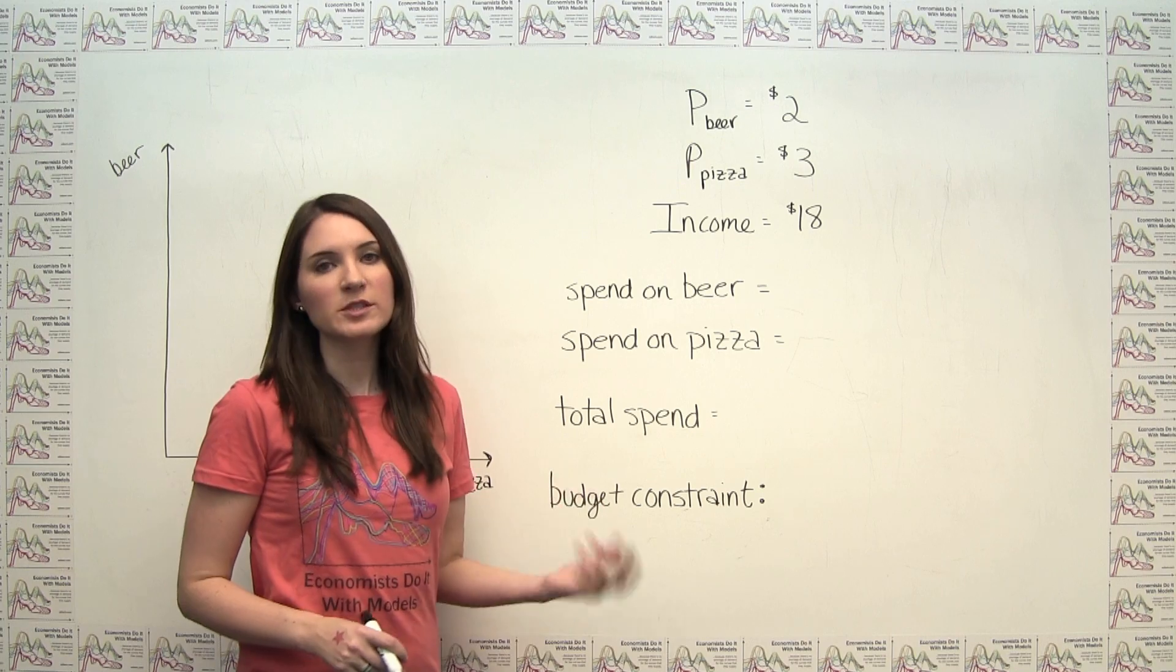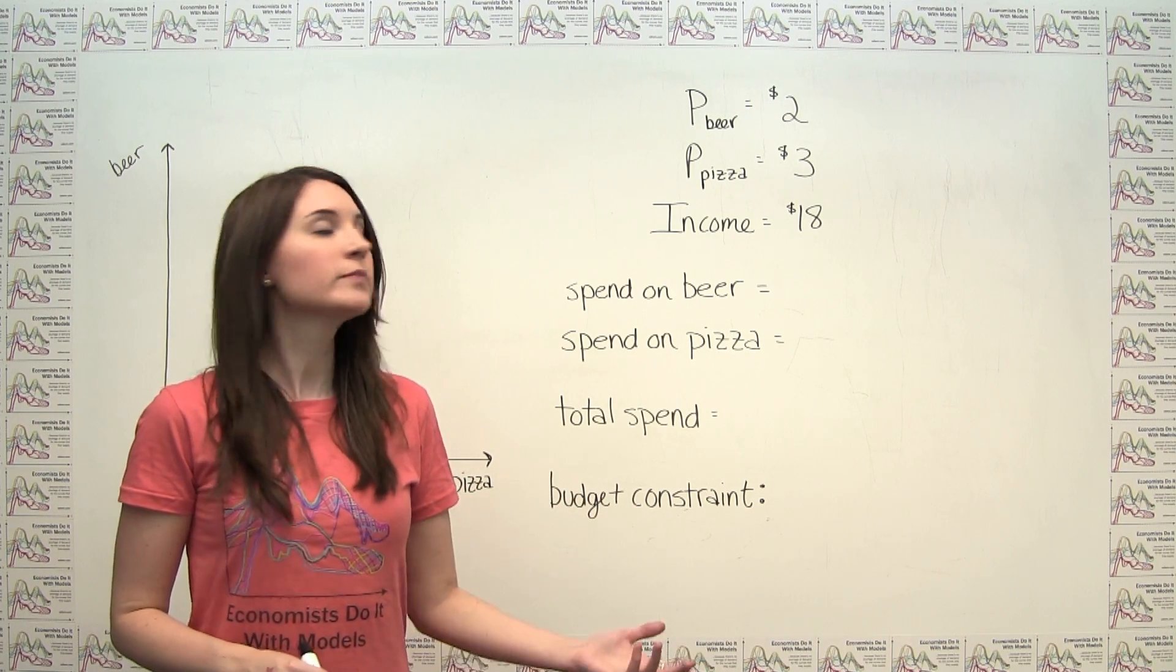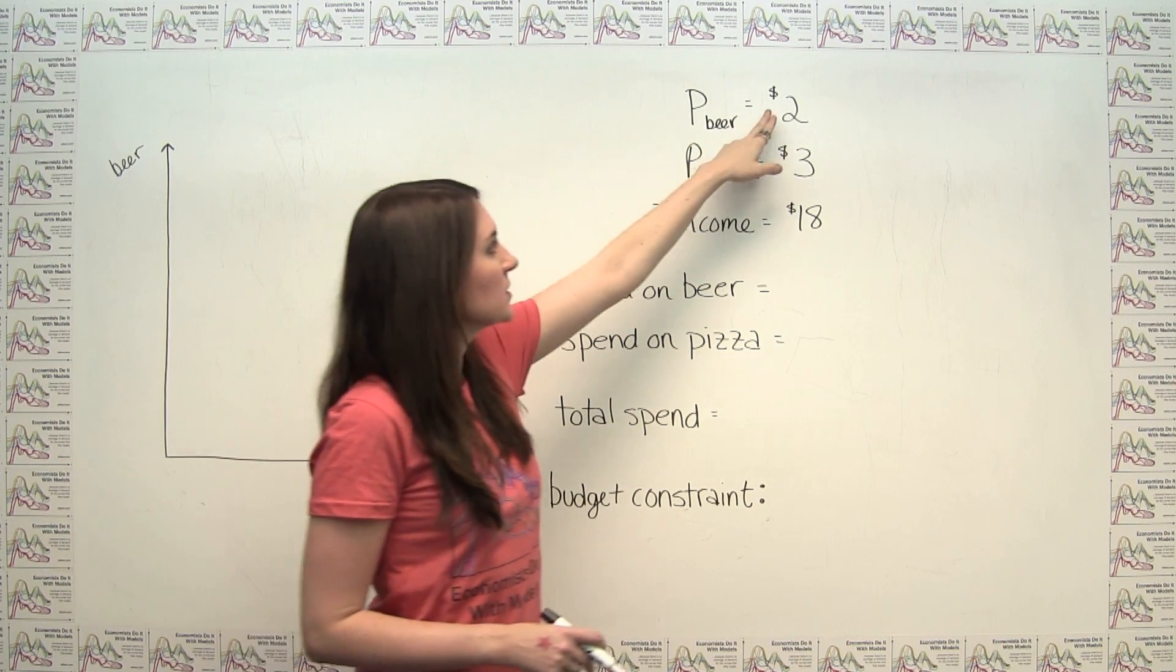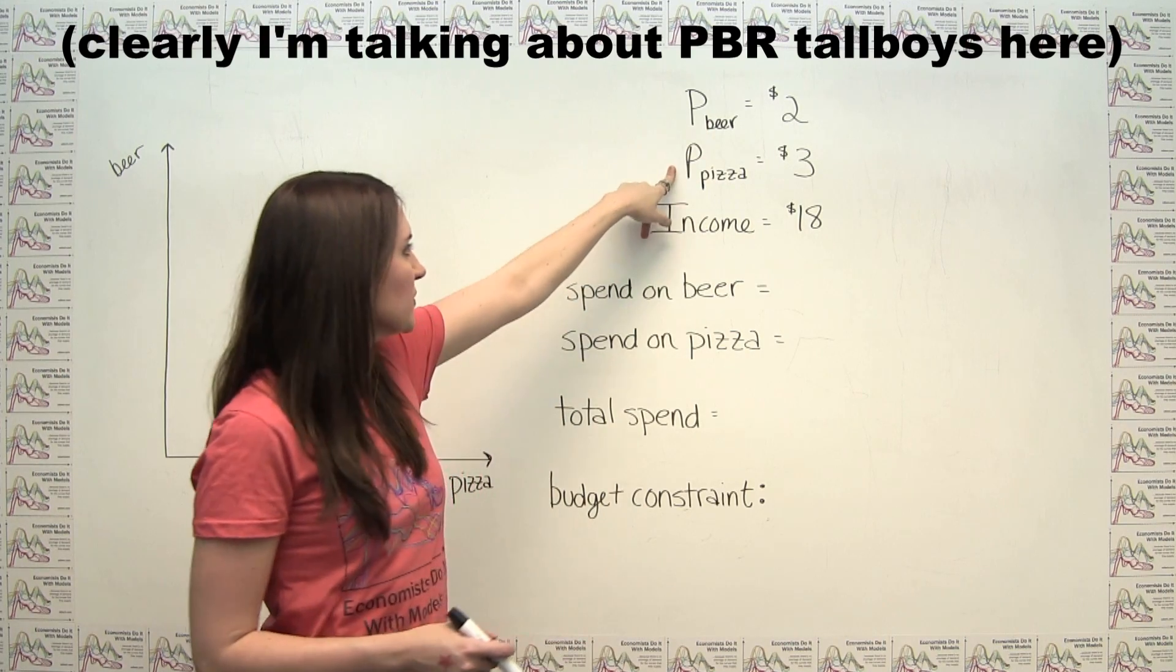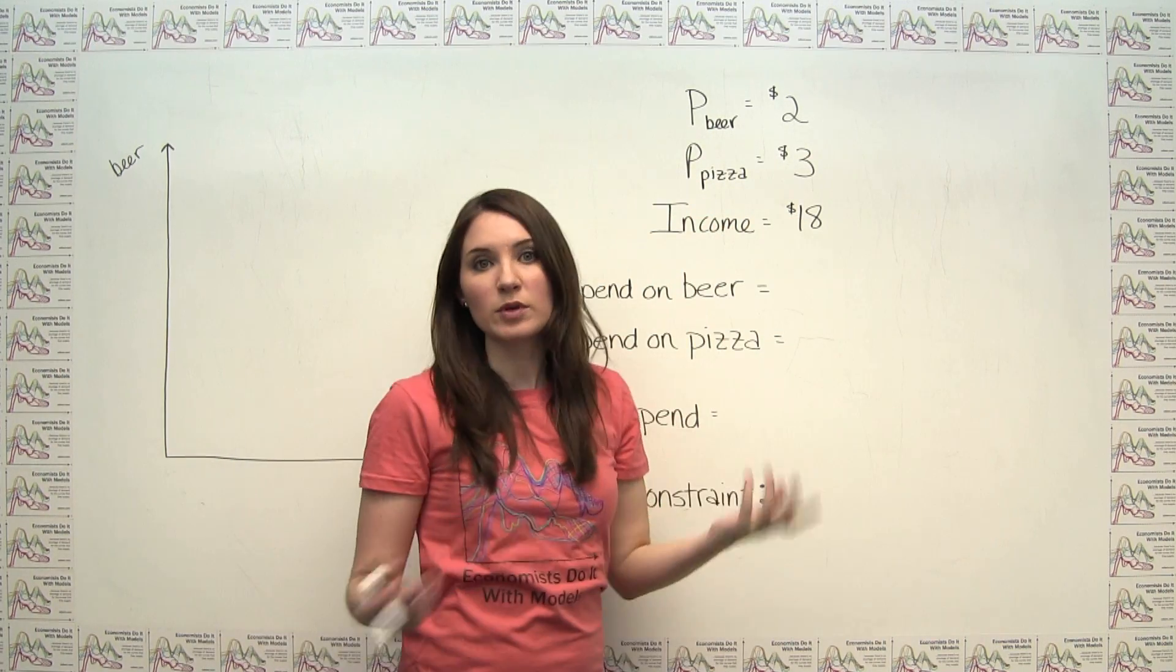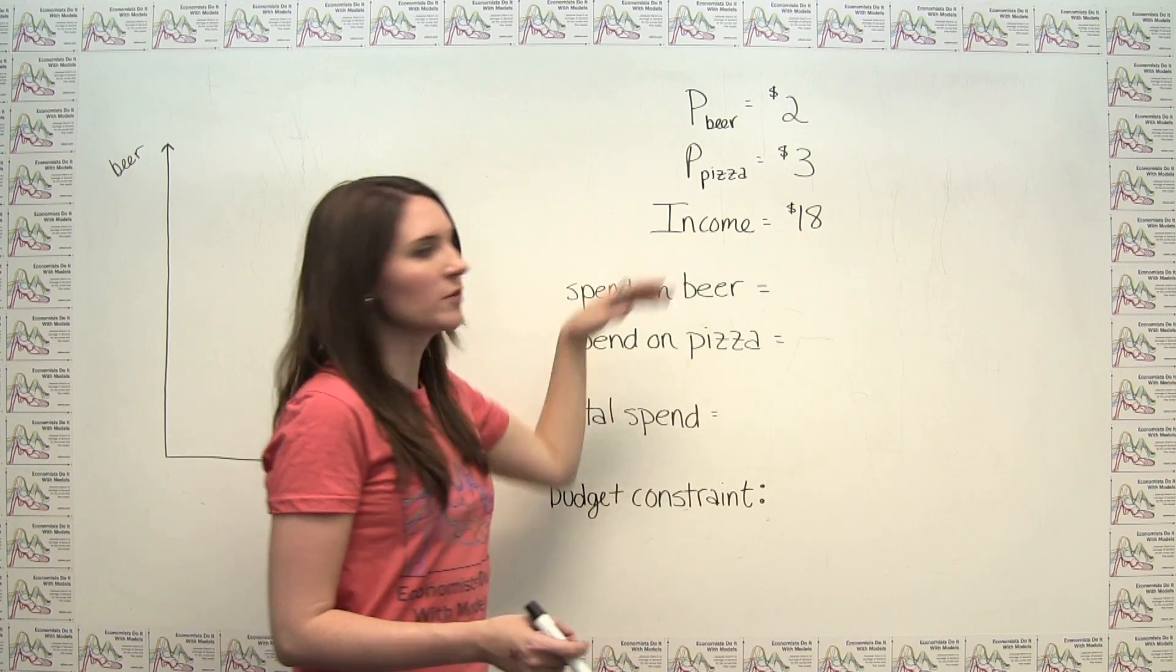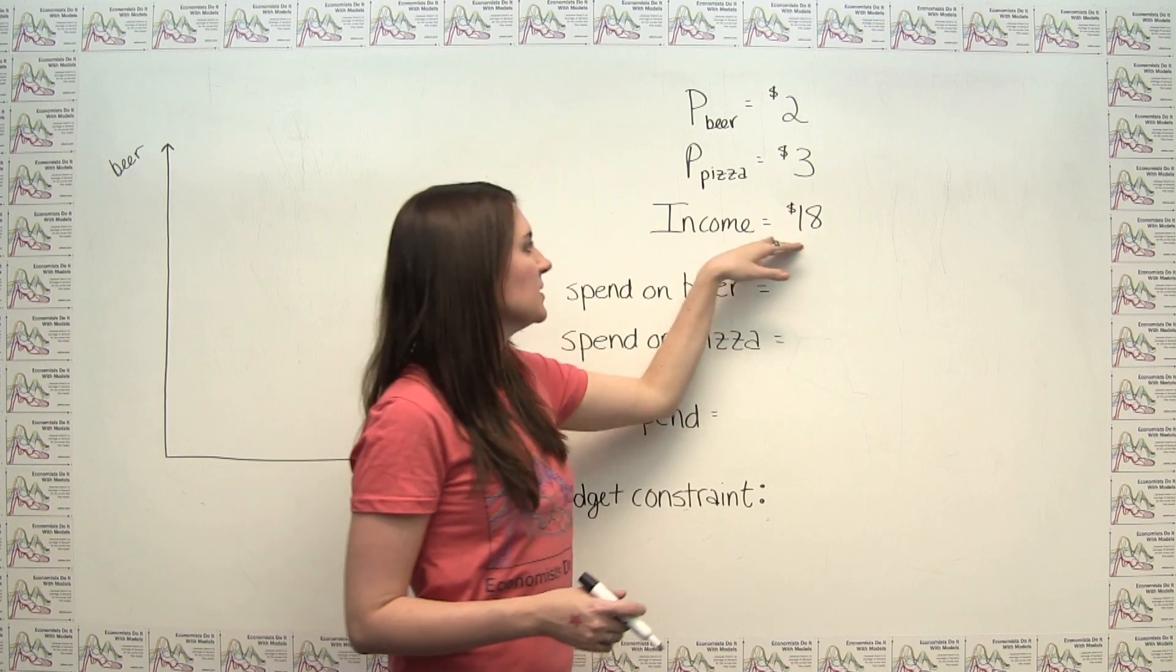The mathematical intuition behind the budget constraint is most easily explained via an example. So here, let's say that the price of beer is $2 per can, and the price of pizza is $3 per slice. And our total income over the period of time that we're optimizing over, or that we're considering, is $18.